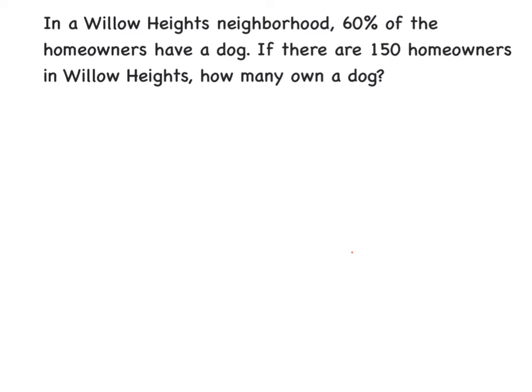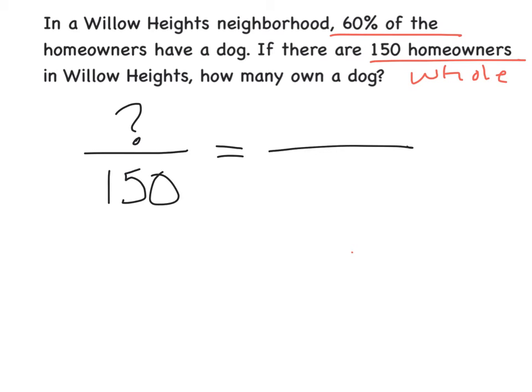Let's try one more problem. In a Willow Heights neighborhood, 60% of the homeowners have a dog. If there are 150 homeowners in Willow Heights, how many own a dog? We must identify the important things in the problem. We see that there is 60% that own a dog and there are 150 homeowners. This would have to be a whole because it's talking about all of the homeowners in Willow Heights.